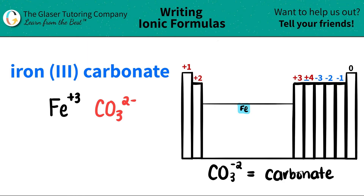Since I have both charges for both components, let's crisscross them to figure out how many of each we need. This 3 crisscrosses down, telling me that I need three carbonates. And this 2 crisscrosses down, telling me that I need two irons. When you do the crisscross, the charges — the positive and the negatives — they kind of vanish, so you don't have to worry about them.